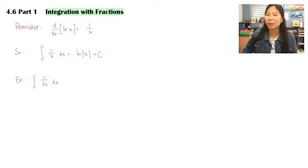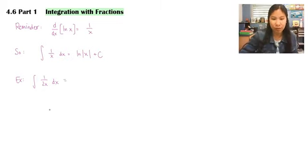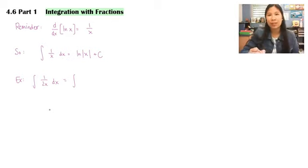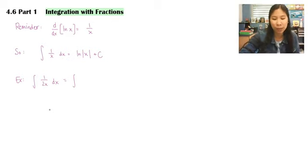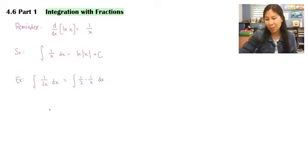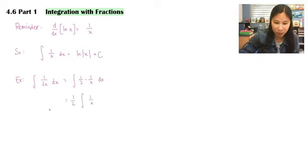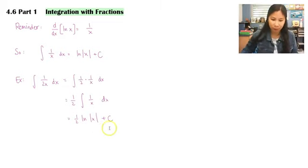Starting with an easy example: the integral of 1/(2x) dx. We notice the fraction and rewrite 1/(2x) as (1/2)(1/x) dx. Since 1/2 is just a constant, we move it outside the integral and end up with (1/2) times the natural log of the absolute value of x, plus C.